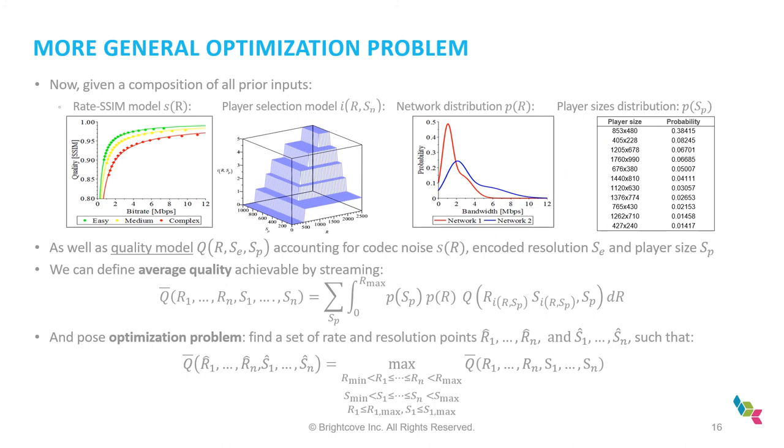So now that we have all these ingredients, we could define more general optimization problem. So we still need to have not quality rate, now noise rate relation. It's SSIM rate function. Then what we will call quality is a more comprehensive figure that now accounts for also resolutions and stretch factors. Then we need to know the player selection model. In this case, it has to be two-dimensional accounting for both rate selection and resolution selection. Then we also need to know network properties, so distribution networks, and we need to know player size distribution as well. So then the quality model that we just discussed earlier could also be recalibrated to use inputs of R, which is rate or equivalently noise from SSIM, as well as encoded resolution and player size resolution subject to projection to PC settings with other calibration parameters as we discussed earlier.